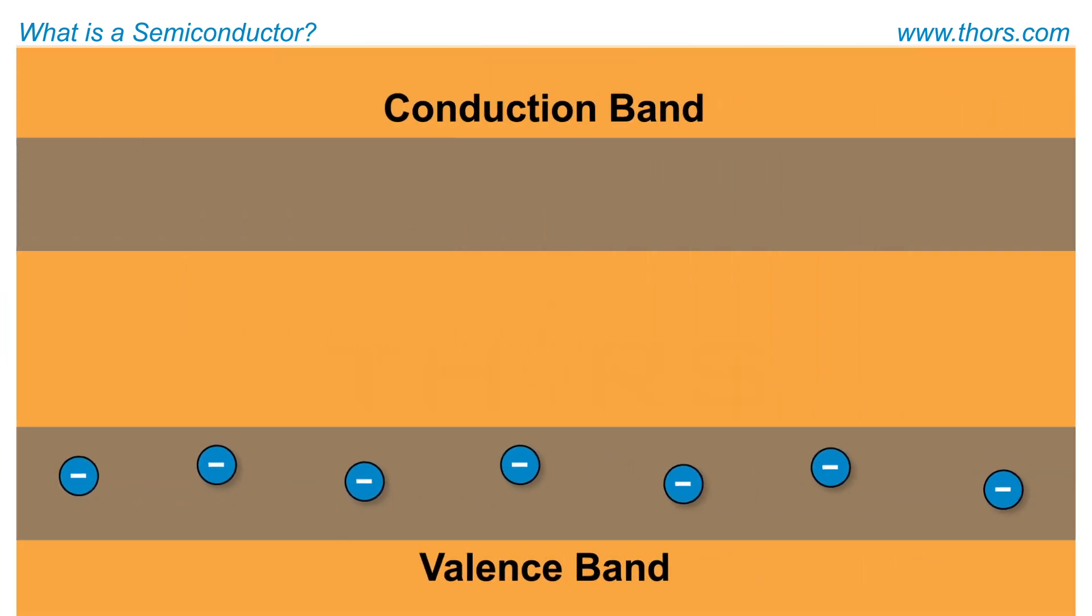The applied voltage stimulates the electrons to move from the valence band to the conduction band where electrical conductivity happens.